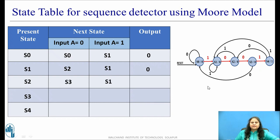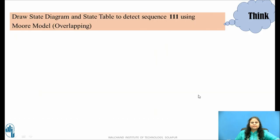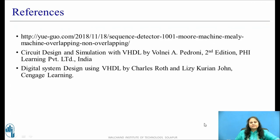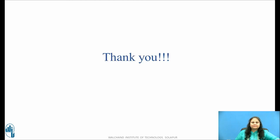This is the state table for the sequence detector using the Moore model. Pause this video and based on the method discussed, try to draw the state diagram and the state table to detect a sequence 1 1 1 using Moore model for the overlapping type. This is the state diagram and state table for the sequence 1 1 1 using Moore model for the overlapping type. These are the references used. Thank you.